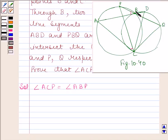Similarly, angle QCD is equal to angle QBD. These are also the angles in the same segment.